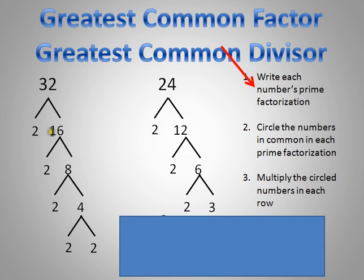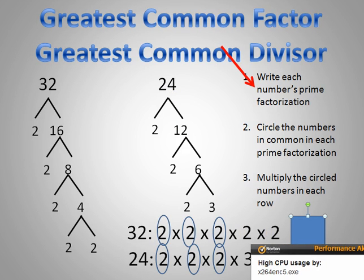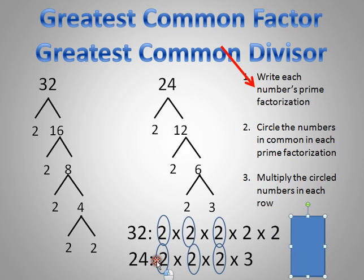Thirty-two is two times sixteen. Two is a prime number so I stop there, but sixteen is two times eight, eight is two times four, and four is two times two. Twenty-four is twelve times two, twelve is two times six, and six is two times three. So thirty-two is 2×2×2×2×2, and twenty-four is 2×2×2×3.